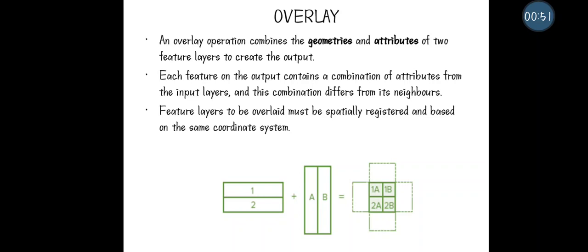When using overlay, it combines the polygons by merging two types of data: the geometrical data of both polygons, and the attribute data of the polygons. When combining two polygon inputs, both the geometrical and attribute data of input 1 and input 2 will be merged together to form the output, giving you the combined attributes and geometrical features of both polygons.